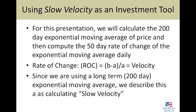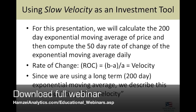We define this as using slow velocity as an investment approach. We're calculating the 200-day exponential moving average, then the 50-day rate of change. Rate of change is another word for velocity — that's why we use that term. Rate of change is nothing more than today's price minus the price 50 days ago, divided by the price 50 days ago. That gives us the rate of change, or our velocity calculation. Because we're taking this rate of change of a 200-day exponential moving average, we refer to it as slow velocity.